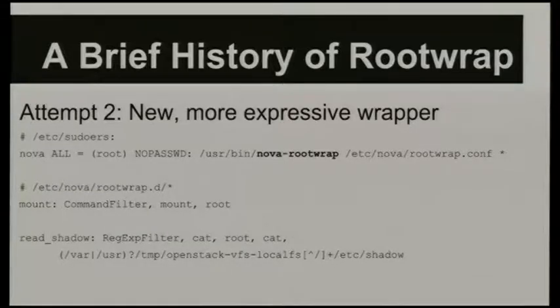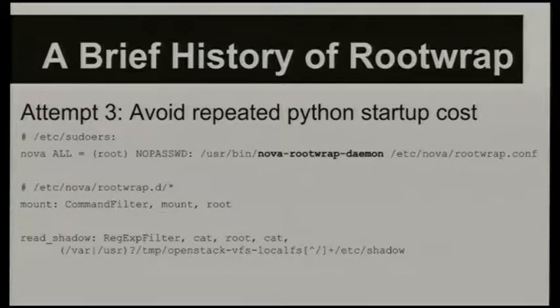This RootWrap extension has worked pretty well for a number of years and has been the state of the art in OpenStack. Recently, particularly with Neutron — where I started thinking about this problem — a lot of what Neutron does is running one-liner IP commands for trivial network configuration. This becomes expensive: you're firing off sudo, then RootWrap, which is a whole Python program that has to start up. Python has quite a slow startup cost, and then you're running your real command. This is quite expensive.